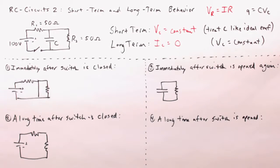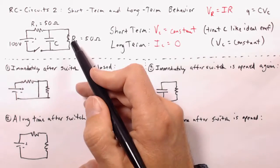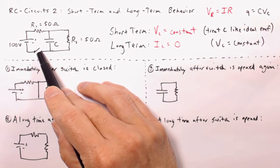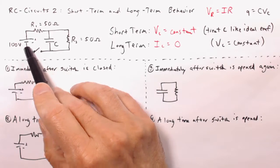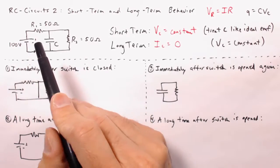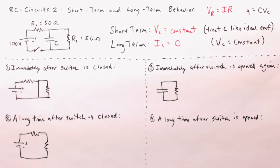So let's look at a few examples. Let's consider what happens in this circuit here immediately after we close the switch, thus allowing current to flow through the circuit.